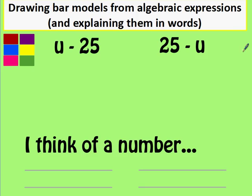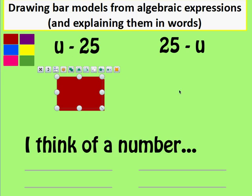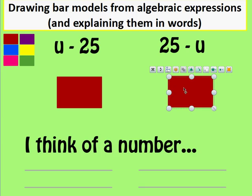Next example. Drawing bar models. Here we've got two very similar looking expressions. u take away 25 and 25 take away u. They're both going to look slightly different. Let's start with a red one for here. And I think I will copy that so I can use that over here as well. Good.